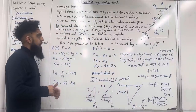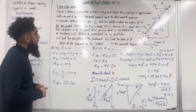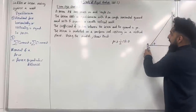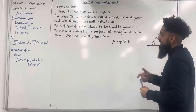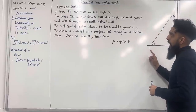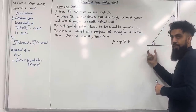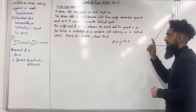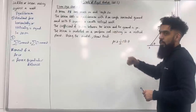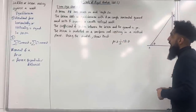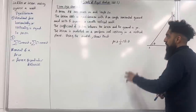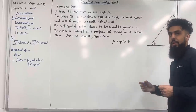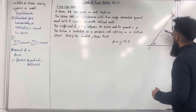Here is exam style question 2. A beam AB has mass M and length 2a. The beam rests in equilibrium with A on a rough horizontal ground and B against a smooth vertical wall — friction at A, no friction at B. The coefficient of friction between the beam and the ground is μ. The beam is modelled as a uniform rod so the weight acts at the centre. Resting in a vertical plane, using the model show that μ ≥ ½ cot θ.